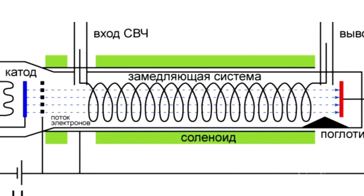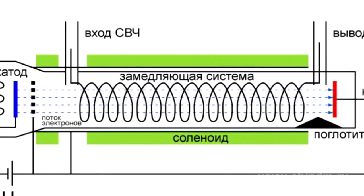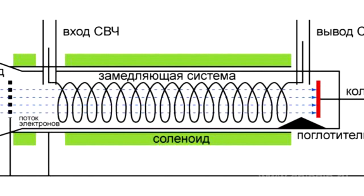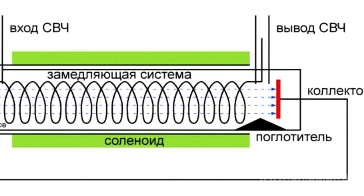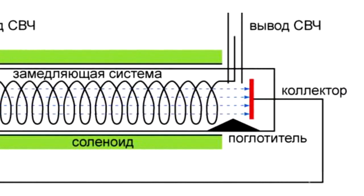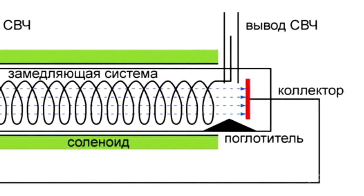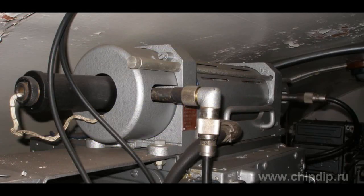The collector accumulates the electrons which have passed through the interaction space. The absorber, in the form of a rod made of an absorbing material, can also be provided to eliminate system self-excitation. The main part of the device is mounted in an airtight container, and the magnets of the focusing system are mounted externally.